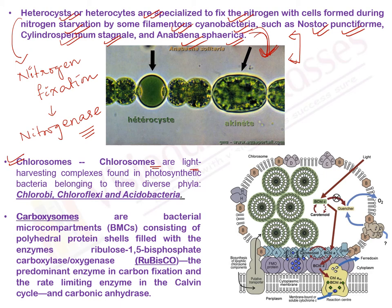Chlorosomes are the light harvesting complexes found in photosynthetic bacteria belonging to three diverse phyla. Examples of photosynthetic bacteria with chlorosomes include Chlorobi, Chloroflexi, and Acidobacteria. Because they contain bacteriochlorophyll, they are photosynthetic. The matching term for chlorosomes is bacteriochlorophyll.